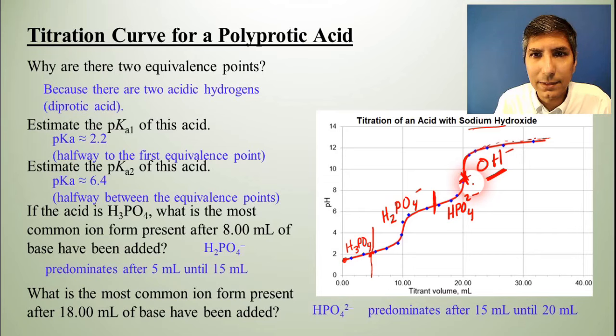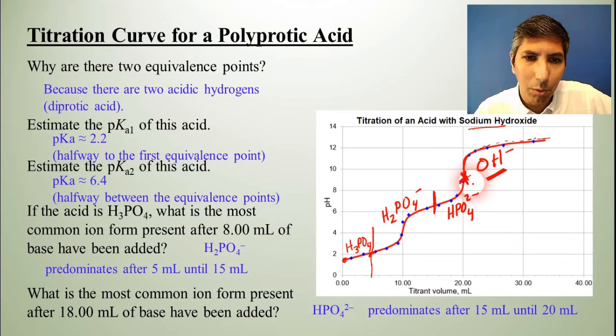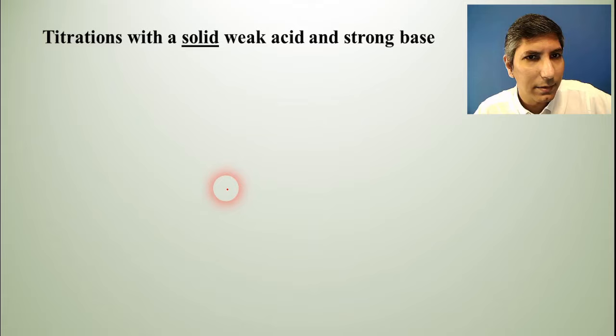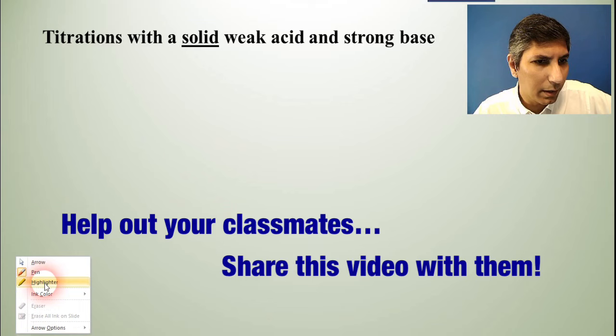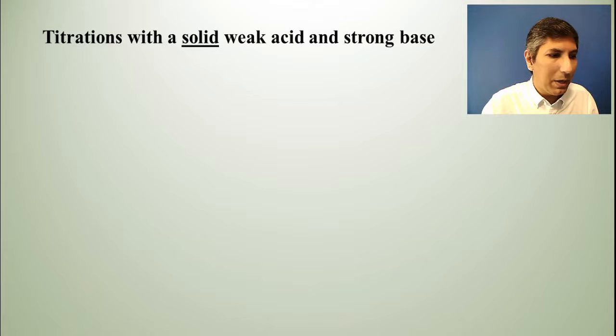So that's just a little map of how this titration curve works and what predominates at what point in the titration. Let's take a look at a different type of titration. This is kind of a special type. This is something that we use often in analytical chemistry. We often use a solid weak acid in its solid form and titrate that with a strong base.